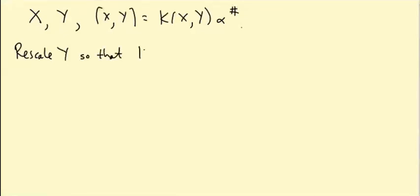So what we have is X, Y, and X bracket Y which is K(X,Y) alpha sharp. So what I claim is we can rescale Y. That's just going to give us an isomorphism of the Lie algebra, rescaling one of the elements, and we can rescale it so that K(X,Y) equals 2 over K of alpha sharp alpha sharp.